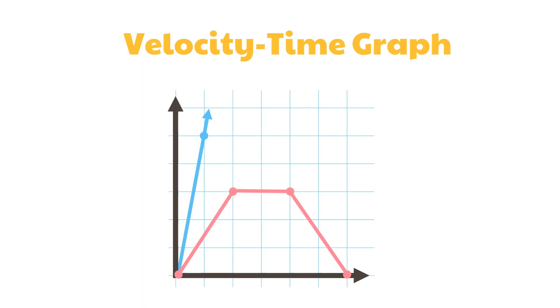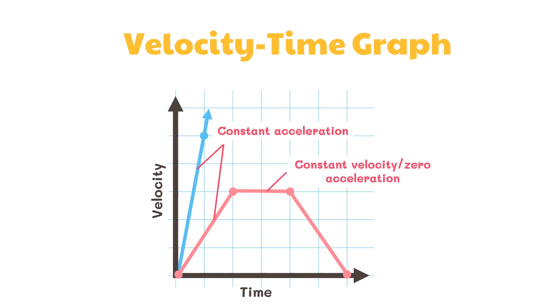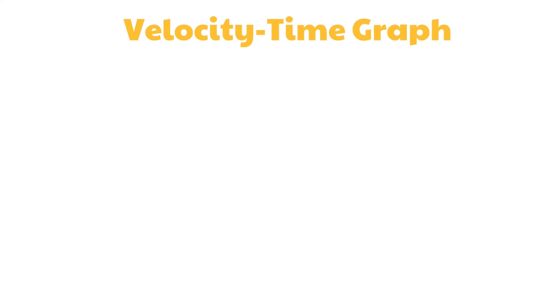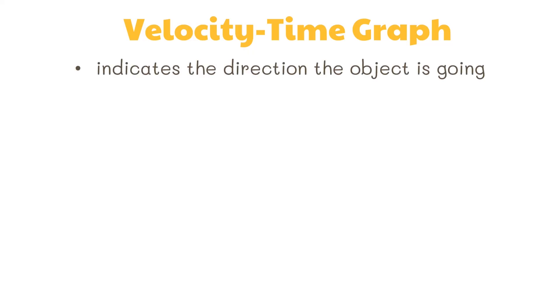Just like the slope of a displacement-time graph, the slope of a velocity-time graph is very important in describing the motion of an object. A velocity-time graph shows the velocity an object travels over a specific period of time. When an object is undergoing constant acceleration, the line on the graph is straight but sloped. An object moving with a constant velocity or no acceleration will have a horizontal line. A straight downward slope shows constant deceleration. The slope of a velocity-time graph not only shows whether an object is accelerating or decelerating, it also indicates the direction the object is going.